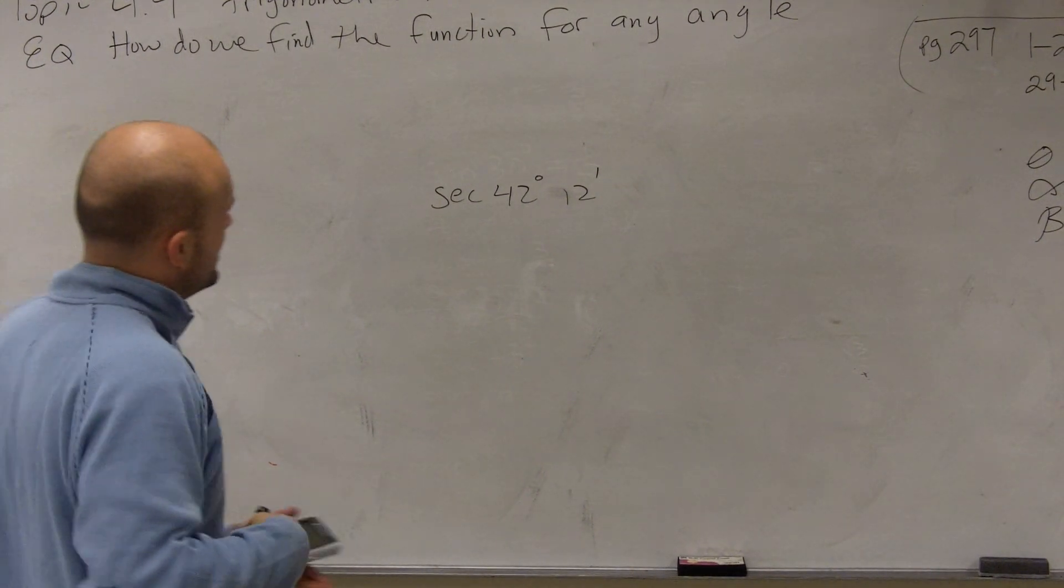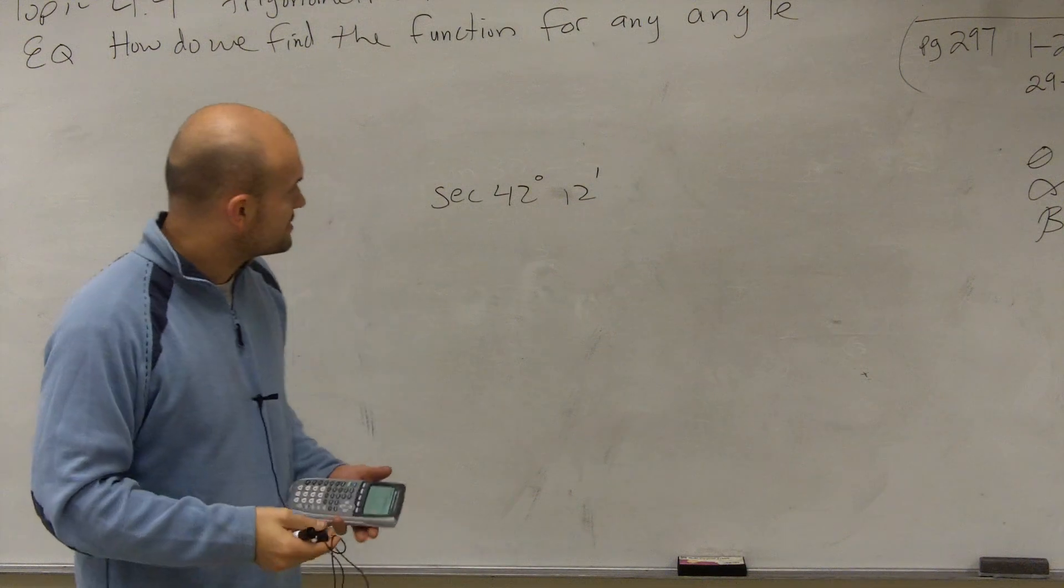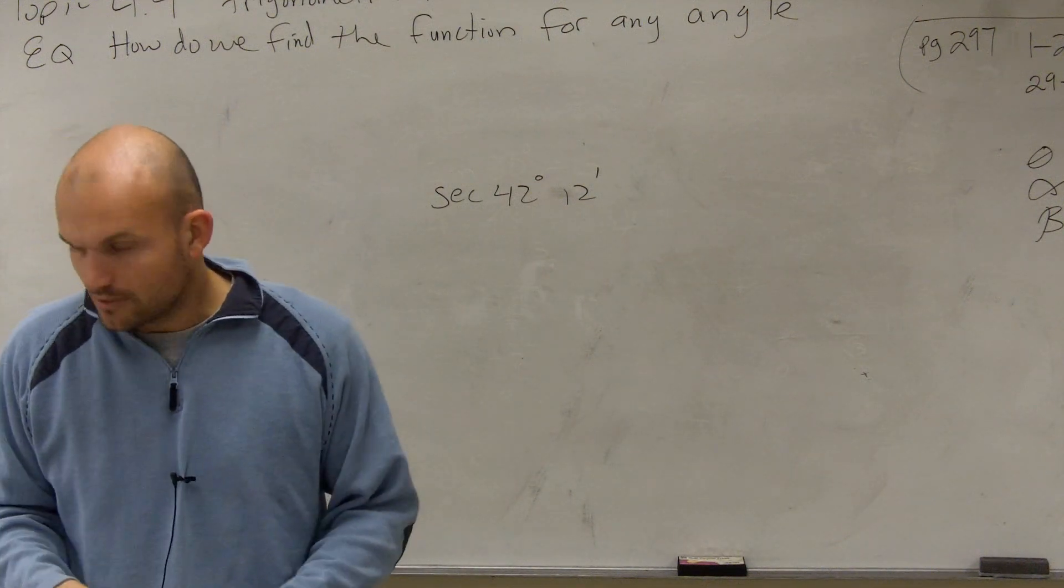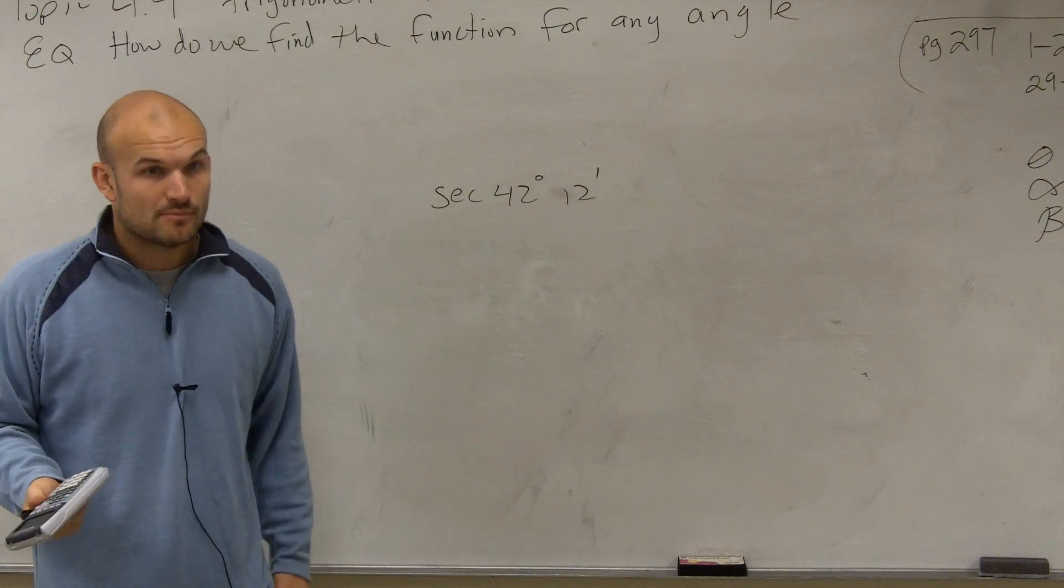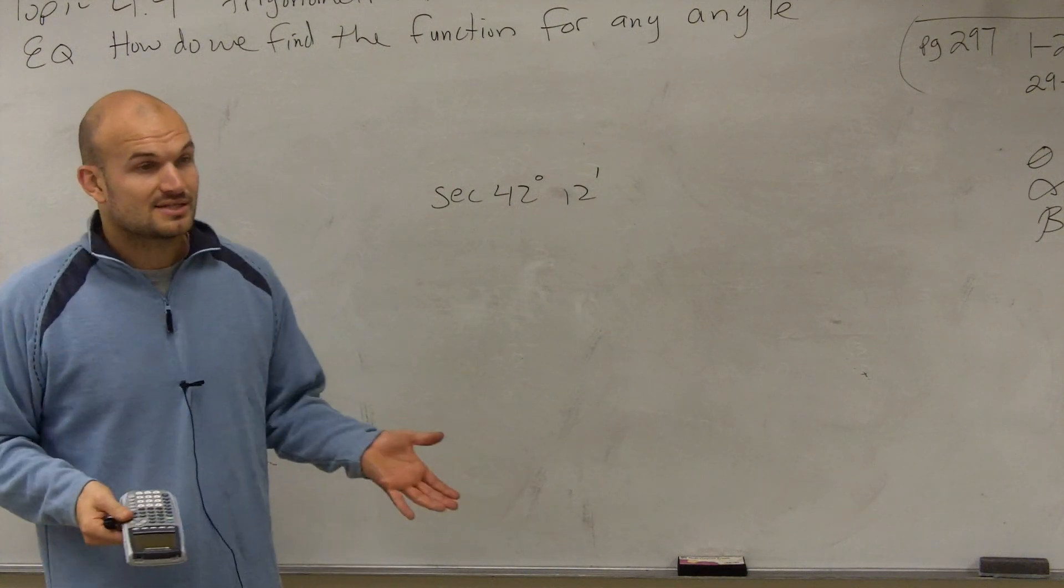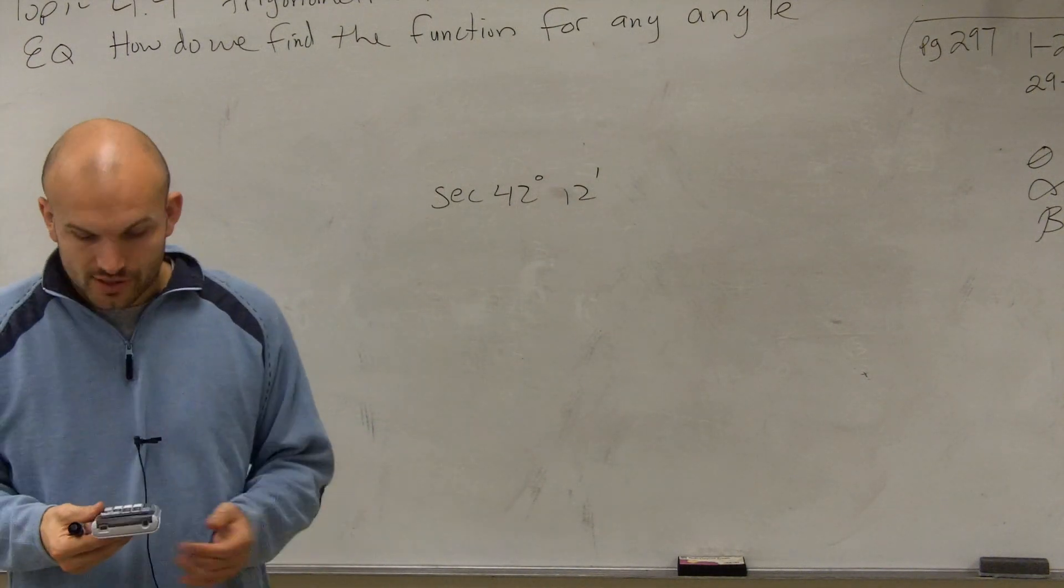If you have secant of 42 degrees and 12 minutes, the first thing you want to do is go on your calculator and make sure you're in degree mode, since we're going to be evaluating using your calculator.